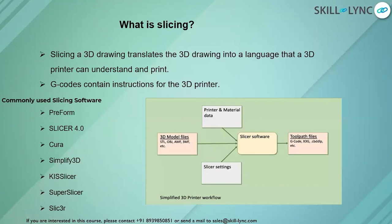Once the STL file is ready, slicing takes place. Slicing is the set of instructions given to the machine to print the 3D model. Using slicing software, toolpath files are created — either G-code or X3G format. Simply put, slicing translates the 3D drawing into a language the 3D printer can understand. Commercially available slicing software includes Freeform Slicer and Cura.